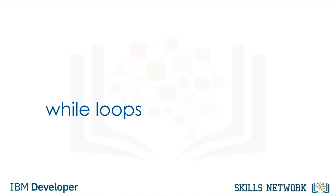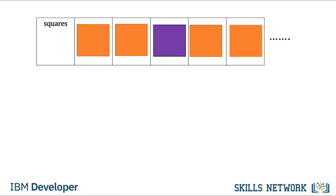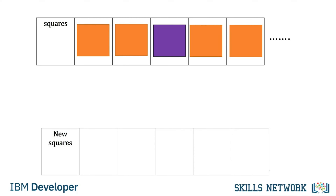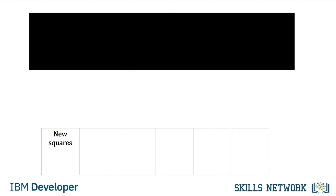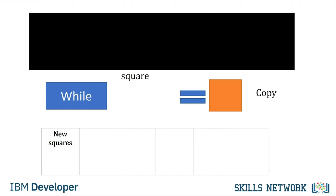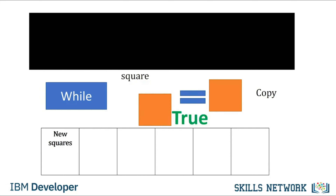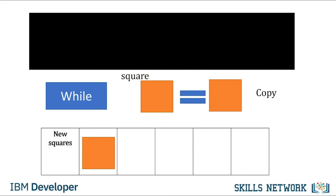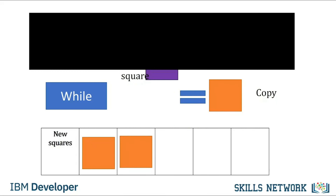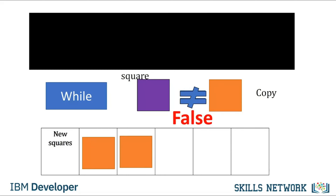While loops are similar to for loops, but instead of executing a statement a set number of times, a while loop will only run if a condition is met. Let's say we would like to copy all the orange squares from the list squares to the list new_squares, but we would like to stop if we encounter a non-orange square. We would simply continue the process while the square is orange. For the first two squares the condition is met and we copy the square, but in the next iteration we encounter a purple square — the condition is not met, so we stop the process.